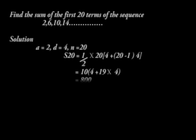For example, find the sum of the first 20 terms of the sequence 2, 6, 10, 14. In our solution, A is equal to 2, D is 4, and N is 20. Using the formula, S20 will be 800.